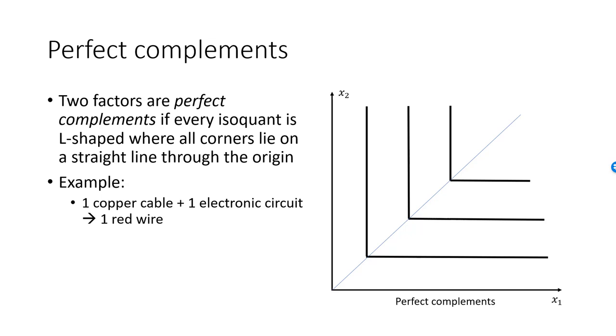For example, if you have nine copper cables and five electronic circuits, then you can produce five red wires and you're left with four copper cables. The production function in this example is y equals the minimum of x1 and x2.